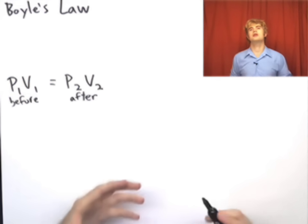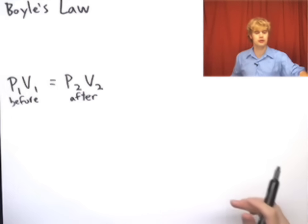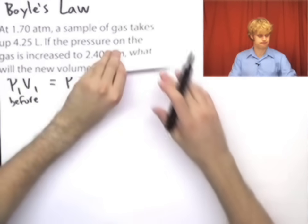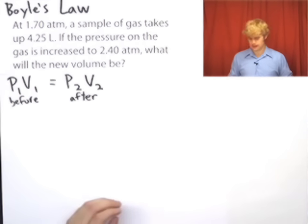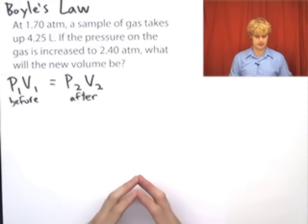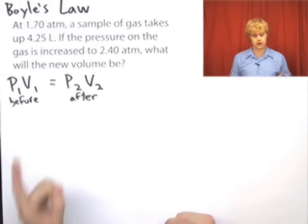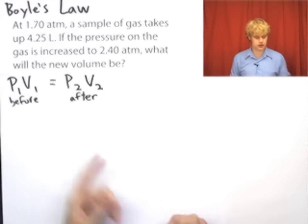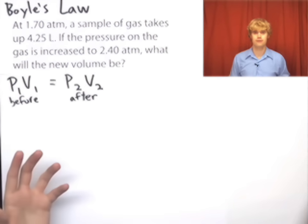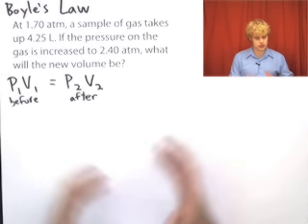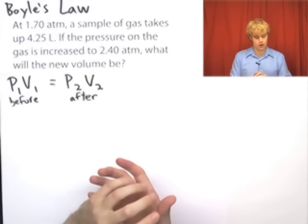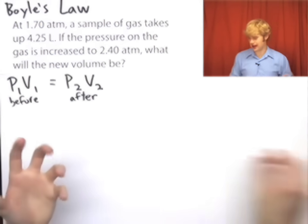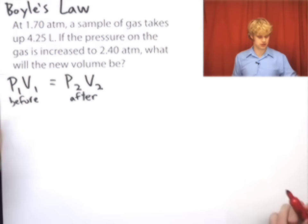So let's move right into an example of a math problem that we might do to see how we can use this. Here is a sample problem. We say here at 1.70 atm, a sample of gas takes up 4.25 liters. If the pressure on the gas is increased to 2.4 atm, what will the new volume be? So as we said before, there is a change that takes place. We increase the pressure. We now want to look at the before of the gas and the after of the gas, figure out which of these variables we need to solve for.